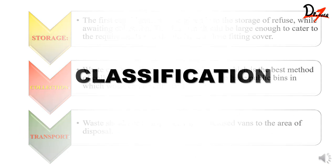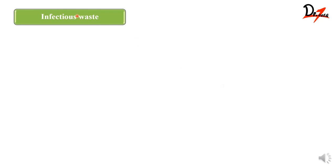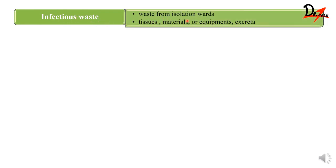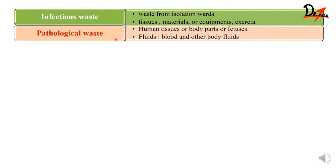Now let's see the classification of wastes — we have a long classification. The first is infectious waste, meaning waste from isolation wards like tissues, materials, equipment, and even excreta. Next is pathological waste, which means human tissues, body parts or fetuses, and also includes fluids like blood and other body fluids.